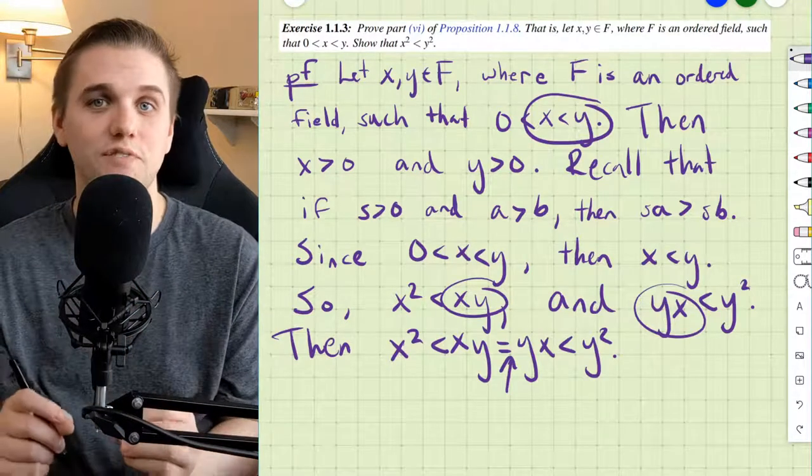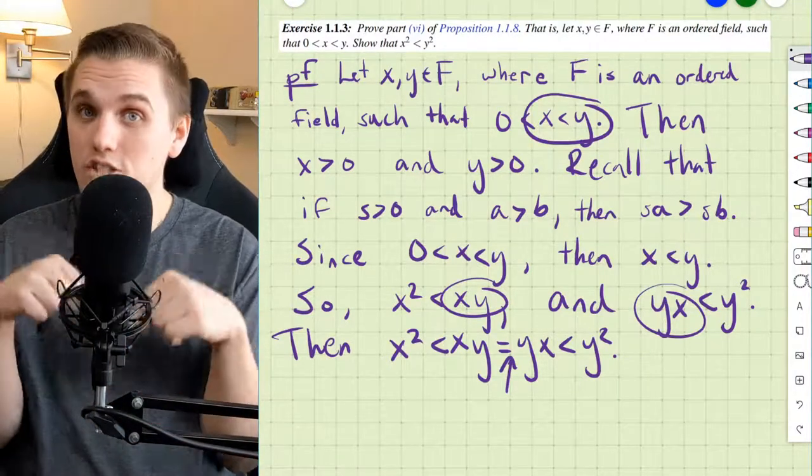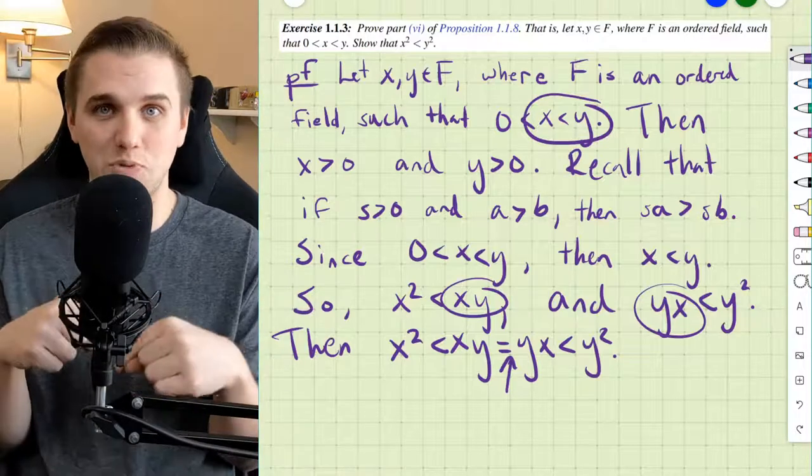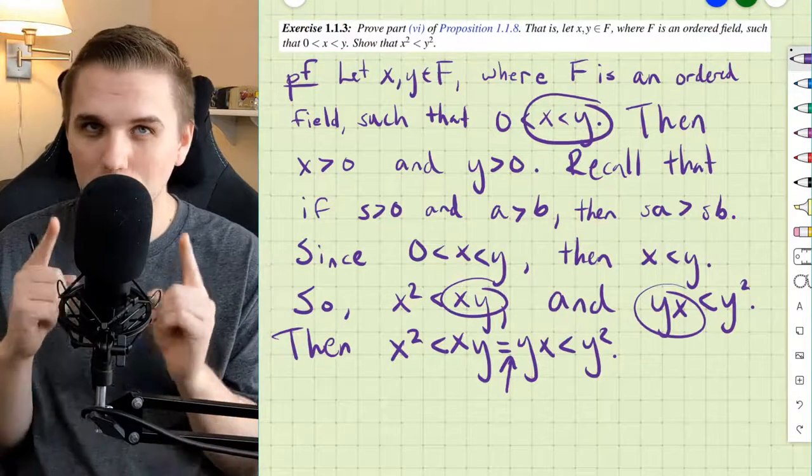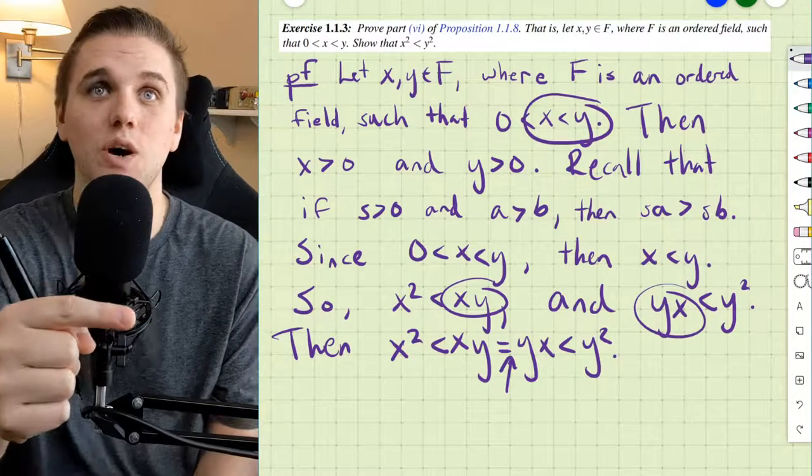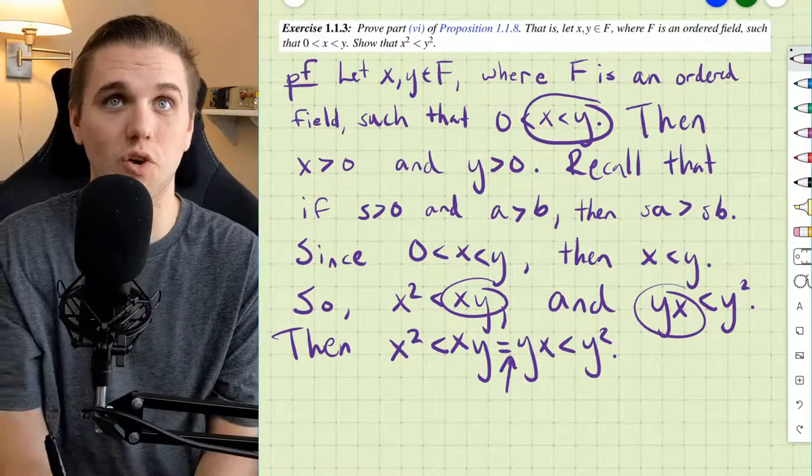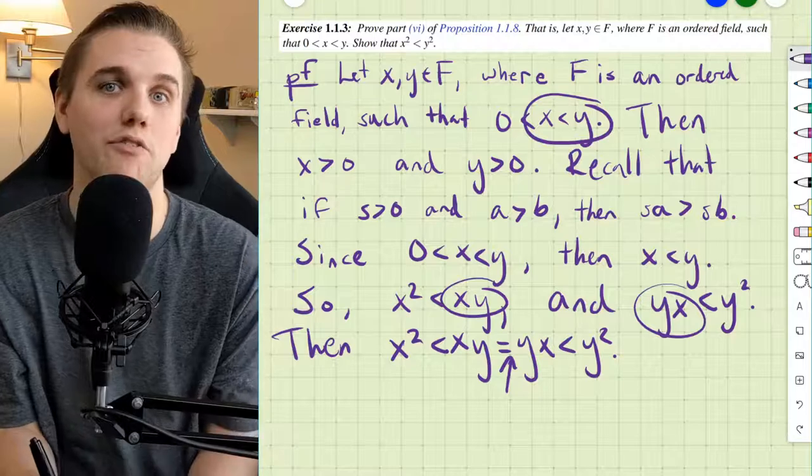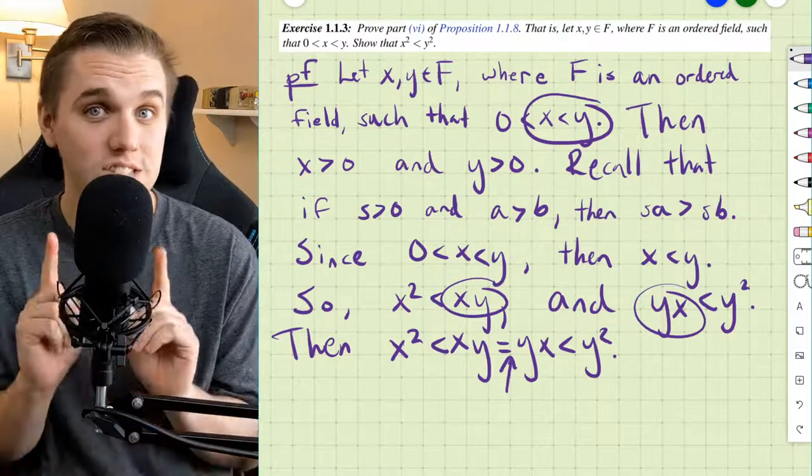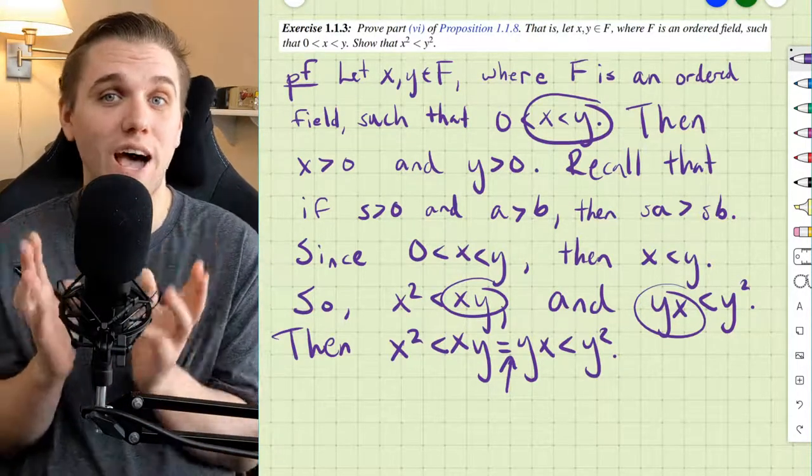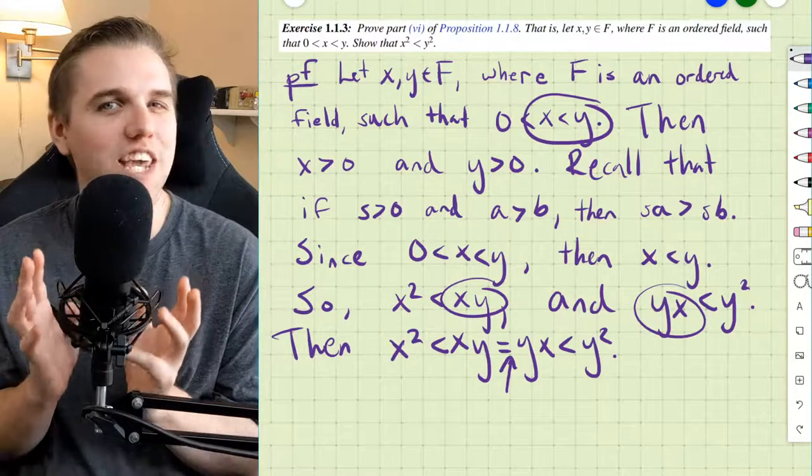And so, because this is a very elementary proof in this course, in this textbook, it's really important to emphasize that we get to assume that this equal symbol is correct because of the commutative property of multiplication, which in some future courses like in abstract algebra, you're not always going to get that luxury.